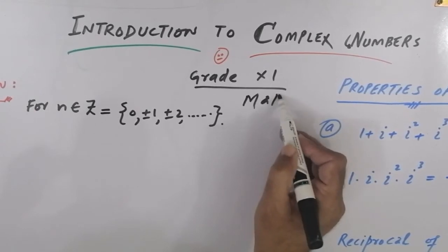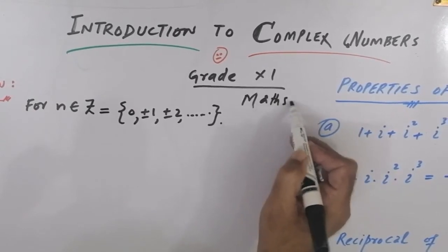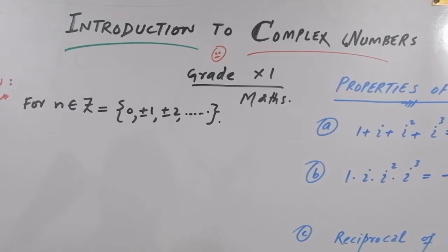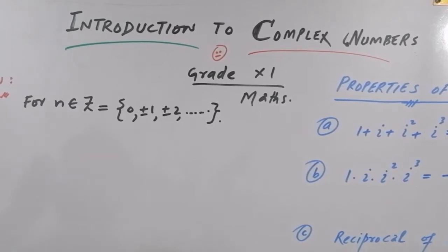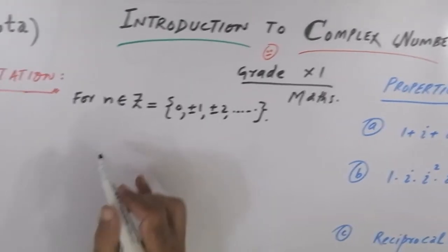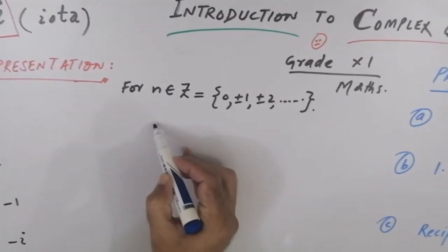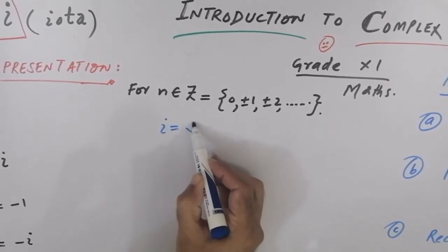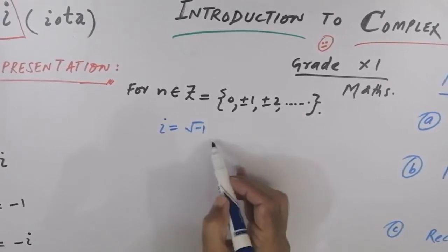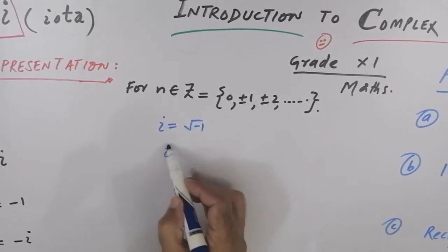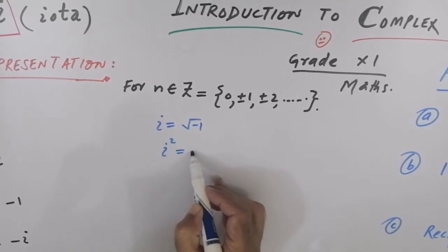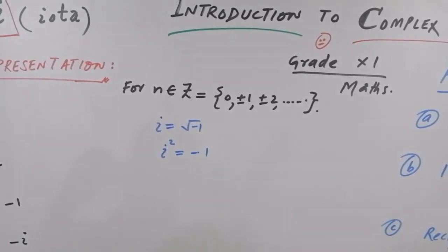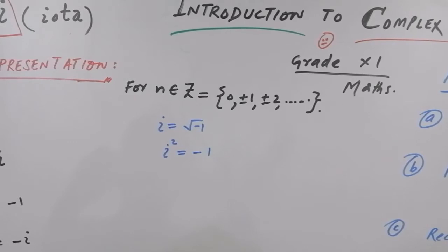The very important and primary thing which I am going to discuss today is IOTA. The value of IOTA is the square root of minus one, and the square value of IOTA is minus one. Now let's talk about higher powers.